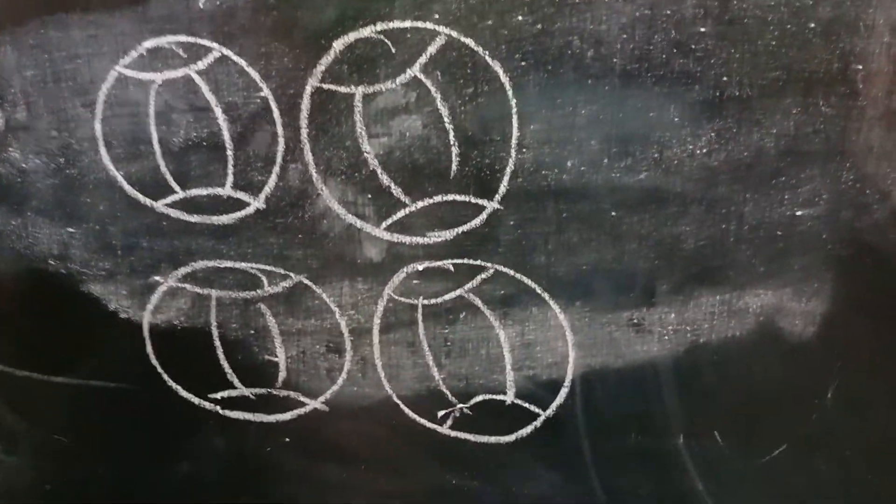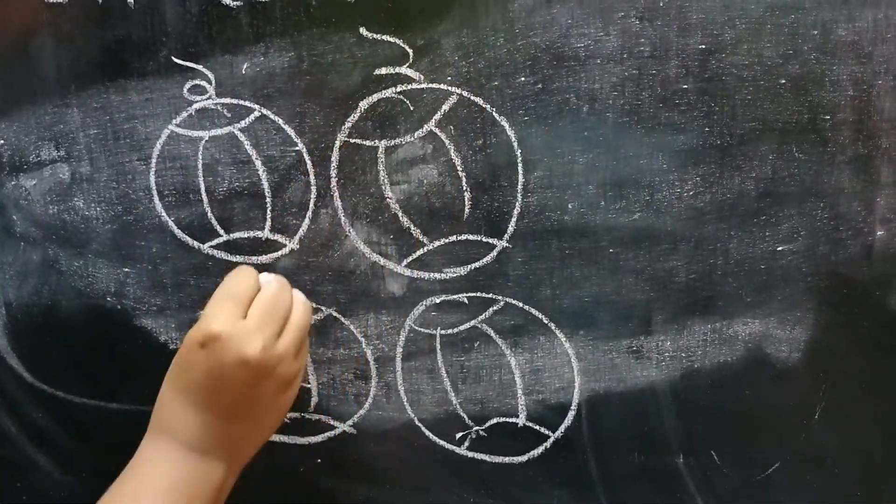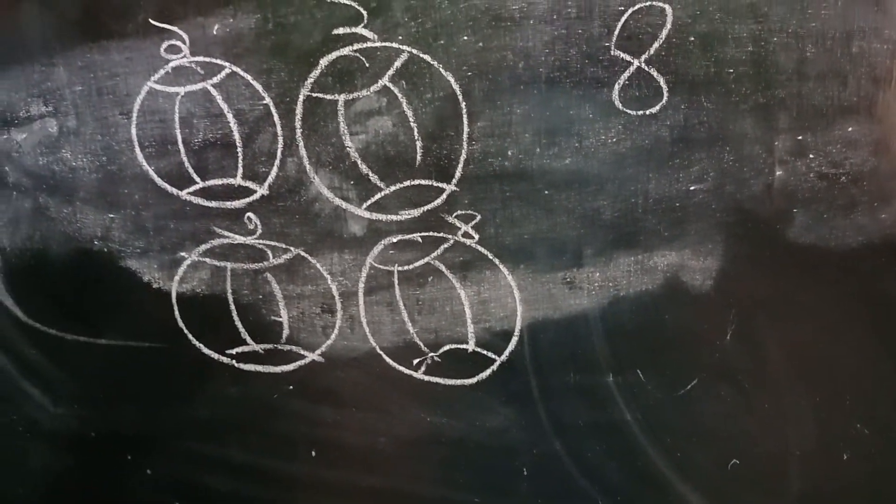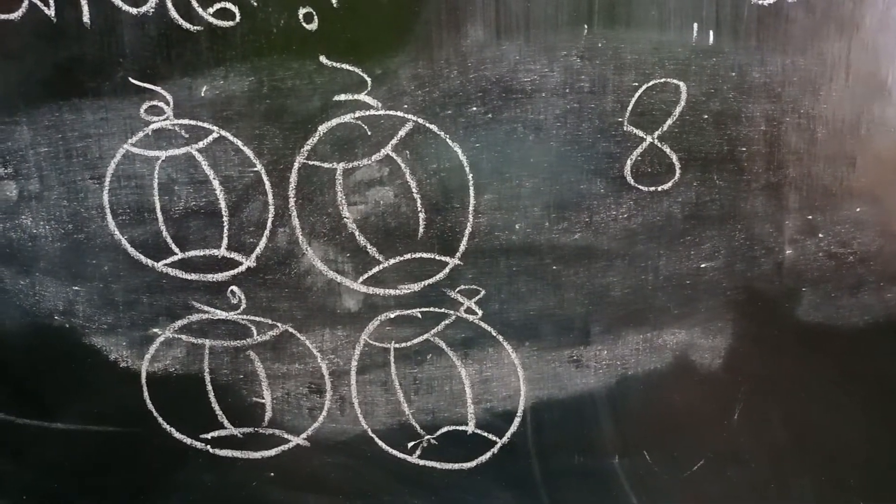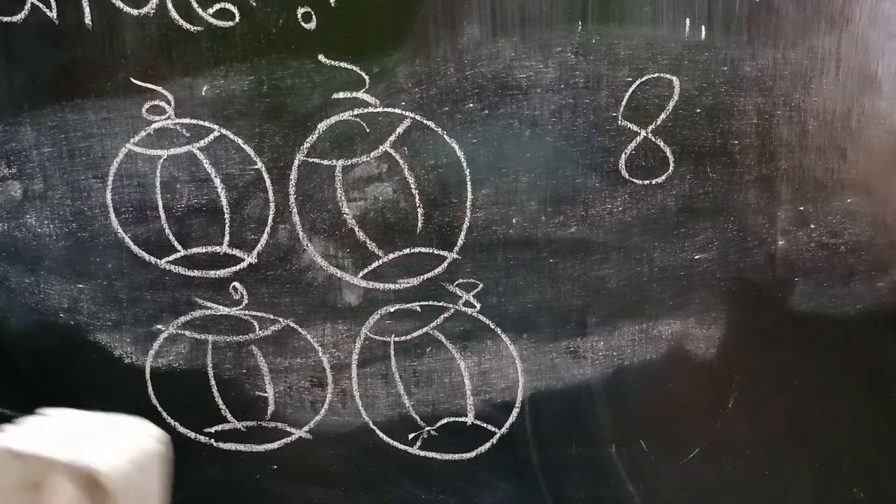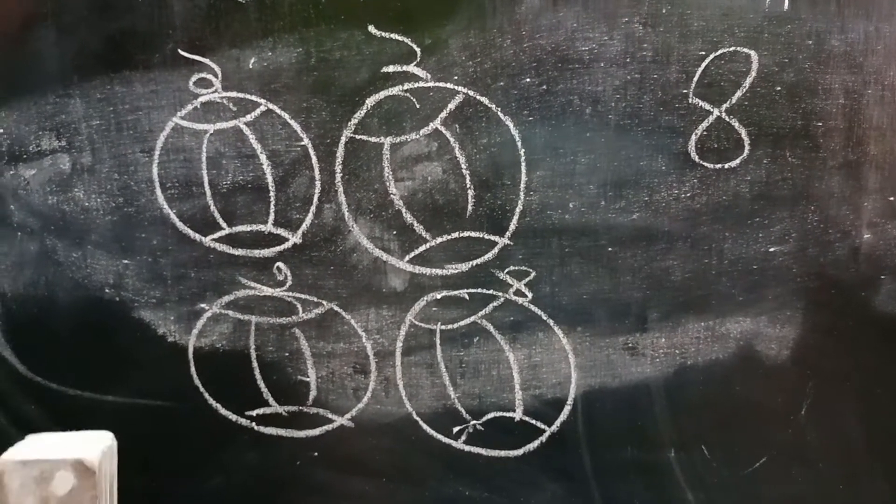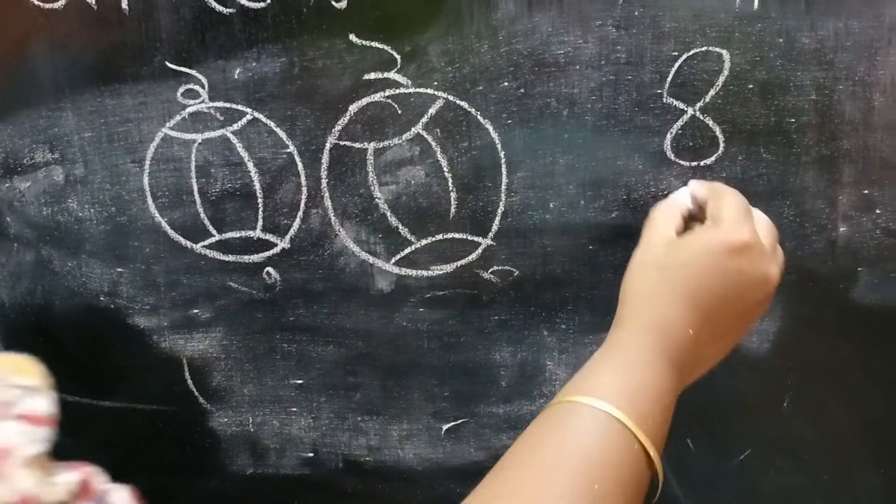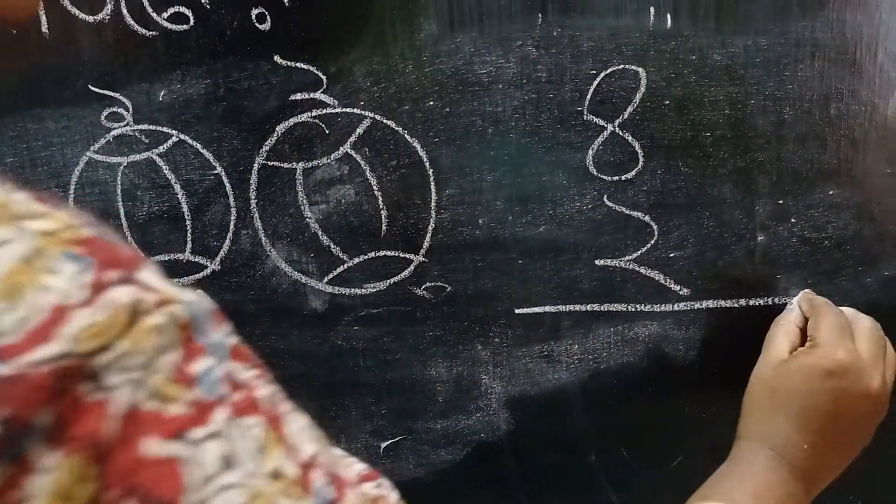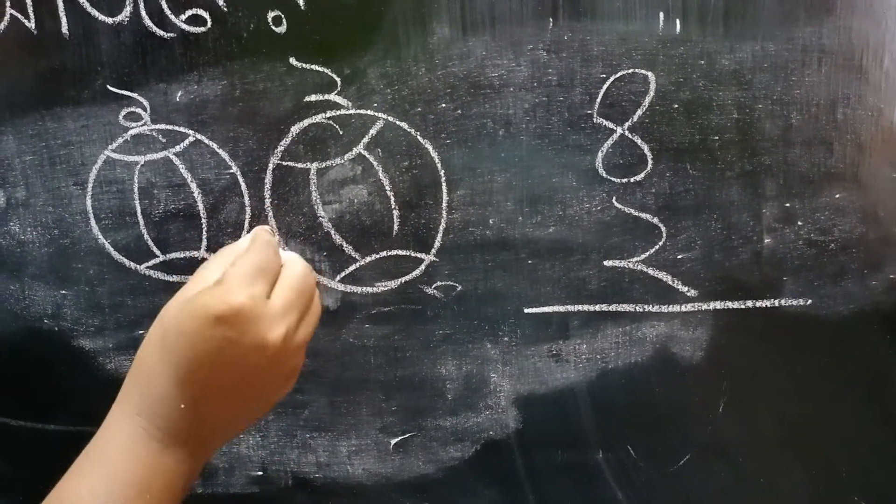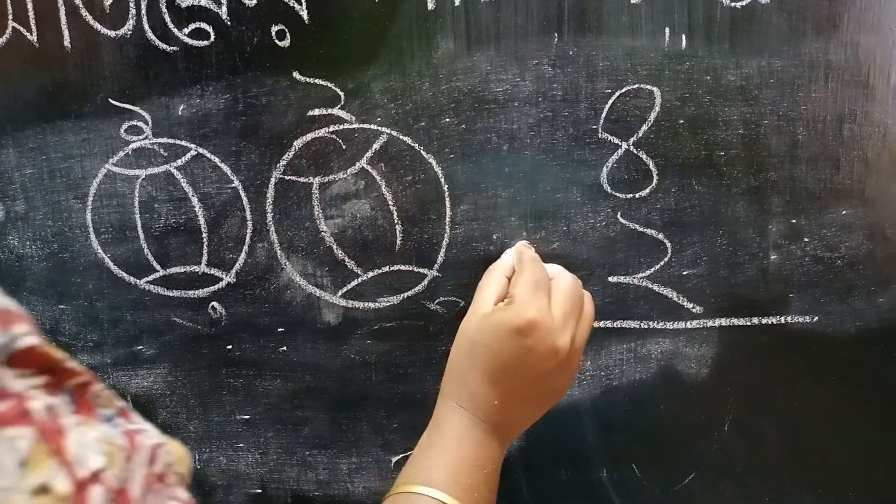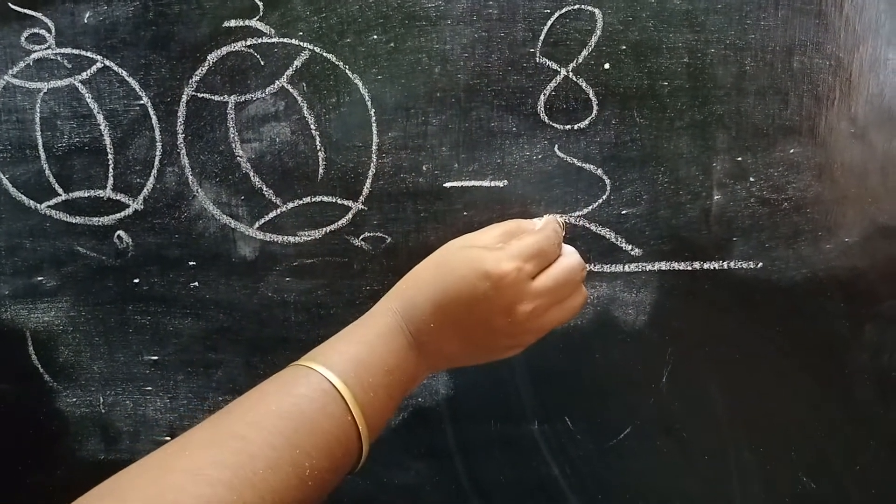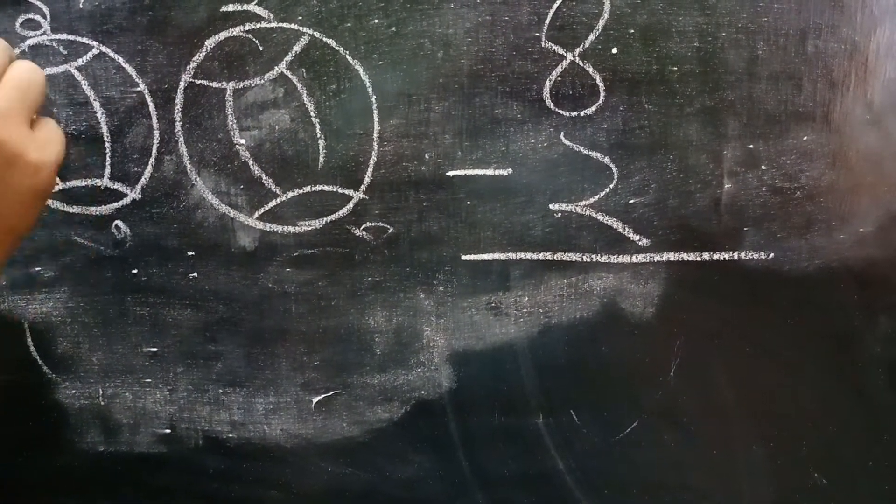This is one ball, two, three, four. So there are four balls. Now there are two balls. You are playing with them. They are spoiled, they are not good anymore.